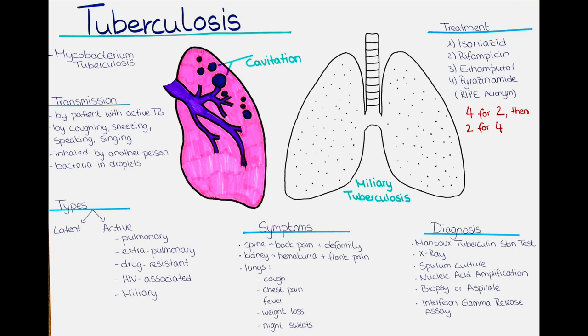HIV-associated tuberculosis: people with HIV are more susceptible to tuberculosis and the disease can progress more quickly in these individuals. HIV-associated tuberculosis can affect any part of the body and can be difficult to diagnose and treat.